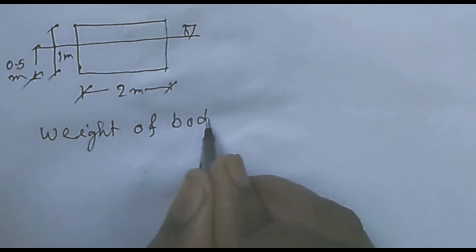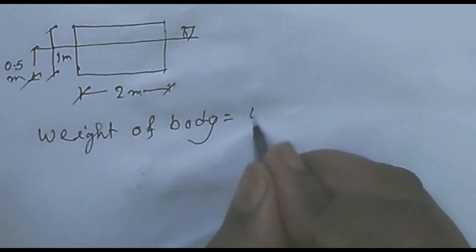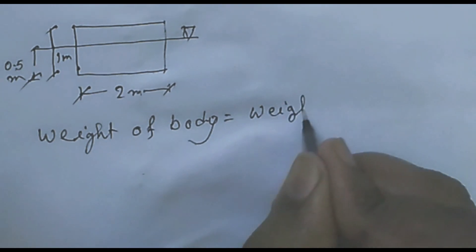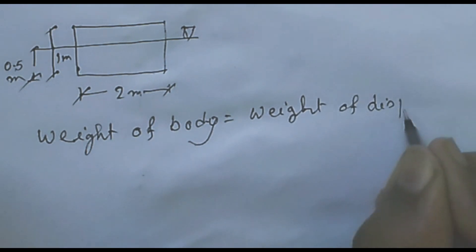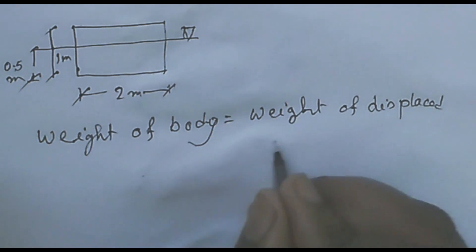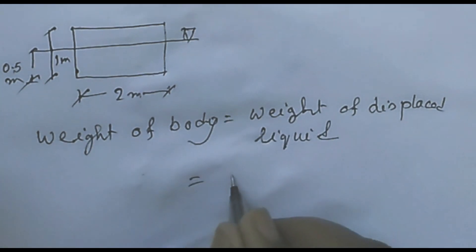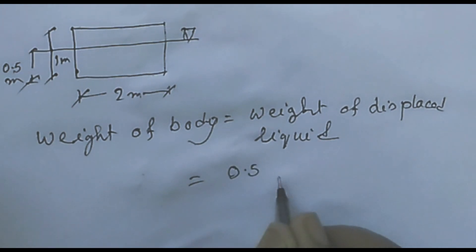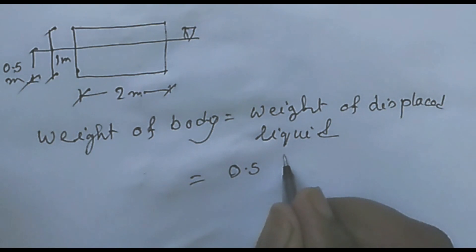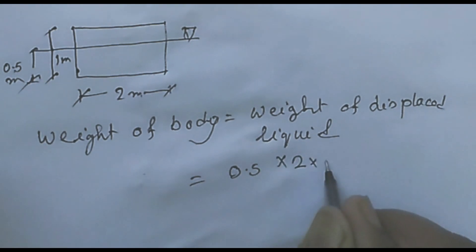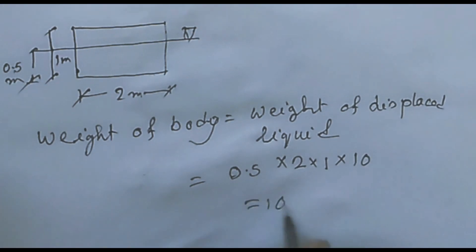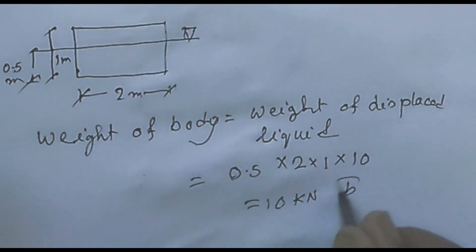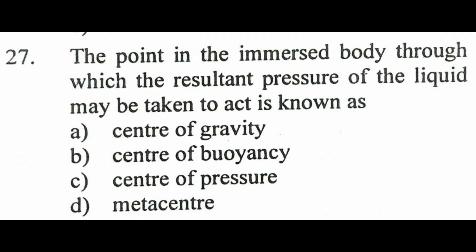Weight of body equals weight of fluid displaced. For a body 0.5 meter long and 0.5 meter wide, the correct option will be determined by equating weight to buoyant force. The correct option view will be confirmed on the next question about the point of resultant action of liquid.